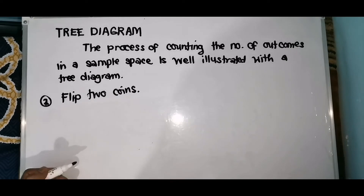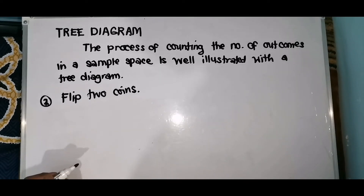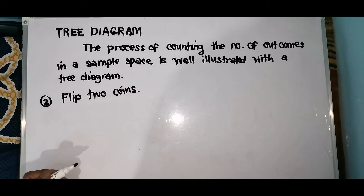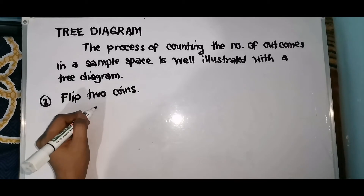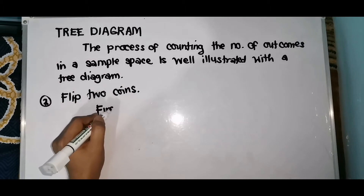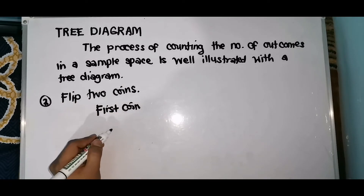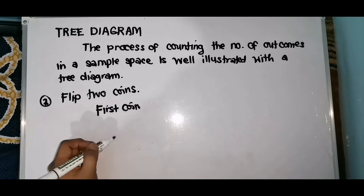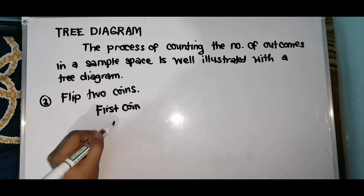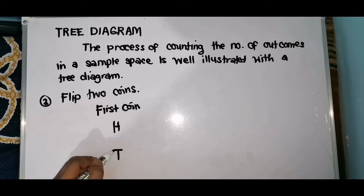For our second example, what if we are going to flip 2 coins? There are 2 possible outcomes when a coin is flipped — that is head or tail. So for our first coin, the possible outcomes are head and tail.